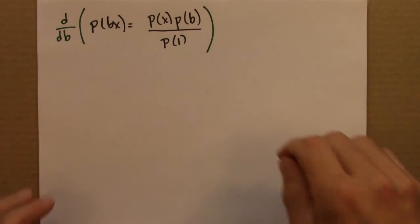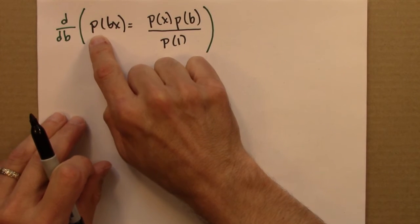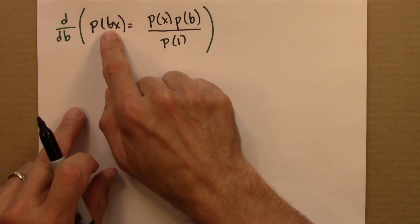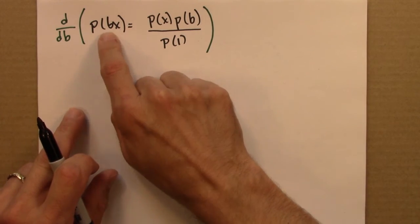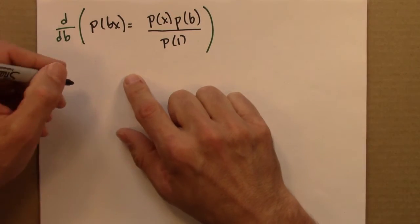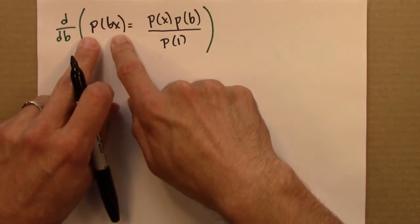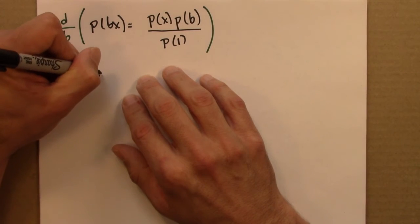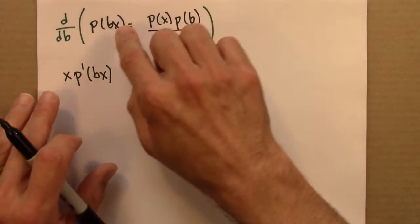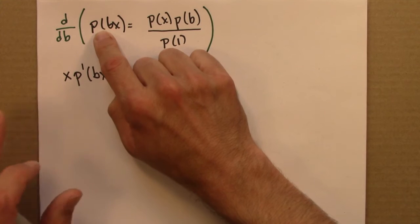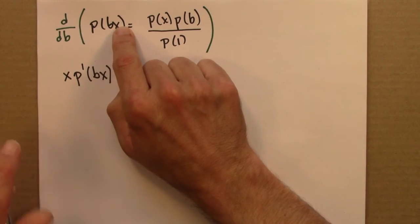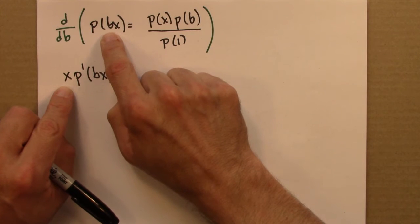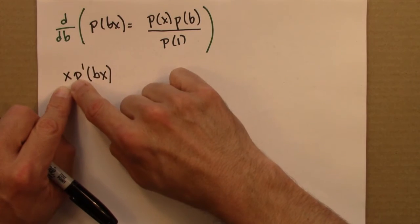So time for some calculus. Derivative of P of Bx with respect to B. So the inner function is Bx. And in this thing, x is actually like a constant because B is what I'm taking the derivative with respect to. So I will end up with x P'(Bx). So let me explain this maybe another way. So chain rule, outer function, inner function. Take the derivative of the outer function and leave the inner function alone. That's what I'm doing here. Then multiply that by the derivative of the inner function. The derivative of Bx with respect to B is x.